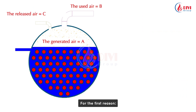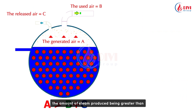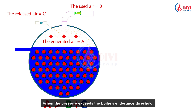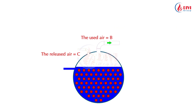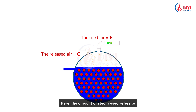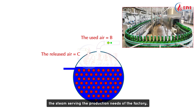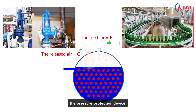For the first reason, the pressure inside the boiler increases due to the amount of steam produced being greater than the total amount of steam used and discharged. When the pressure exceeds the boiler's endurance threshold, it causes a boiler explosion. The amount of steam used refers to steam serving production needs, while the steam discharged is the amount escaping through the pressure protection device, commonly known as the safety valve.